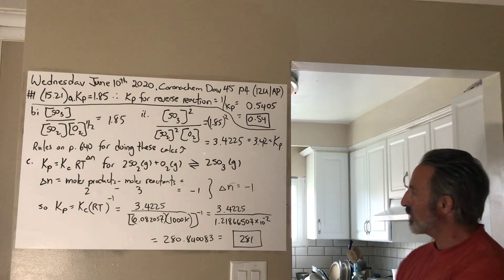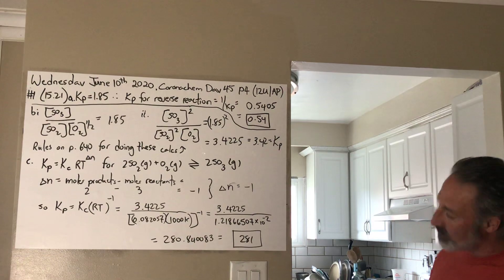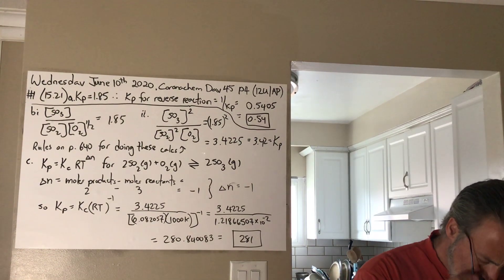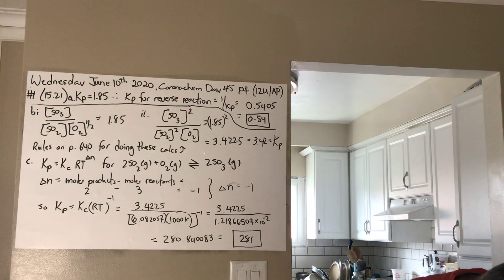Let's see how far we get into it. So, question 51. First question is, at 1000 Kelvin, KP equals 1.85 for the reaction of SO2 gas plus 1.5 O2 gas, giving you SO3 gas.